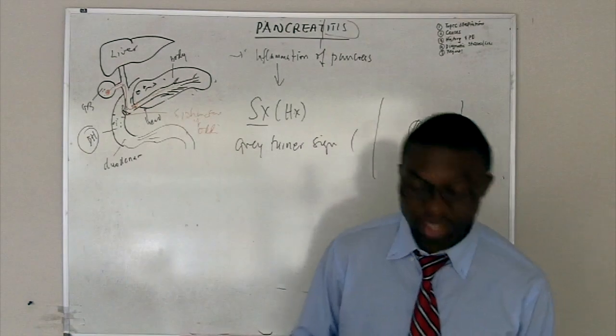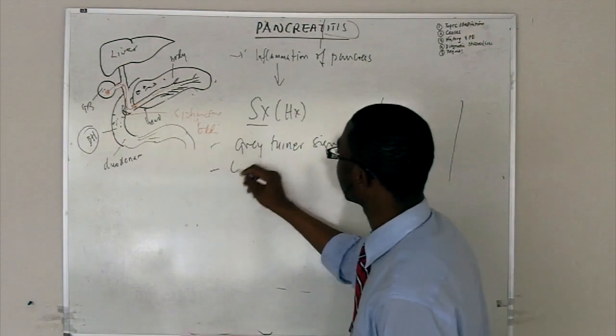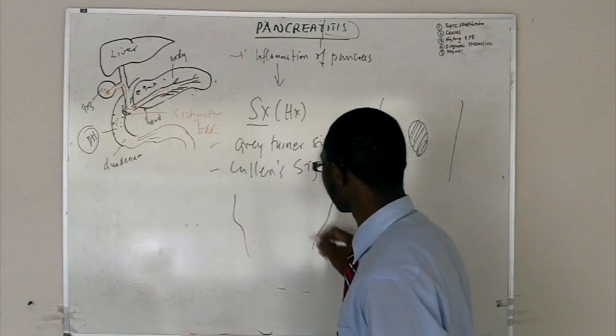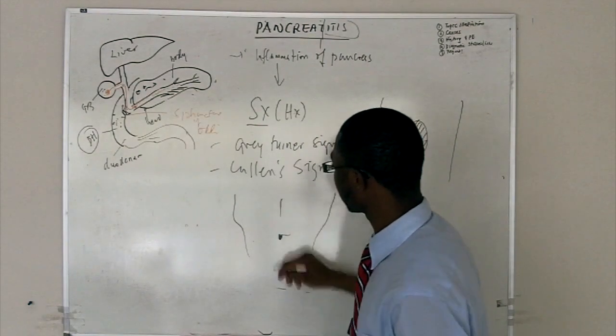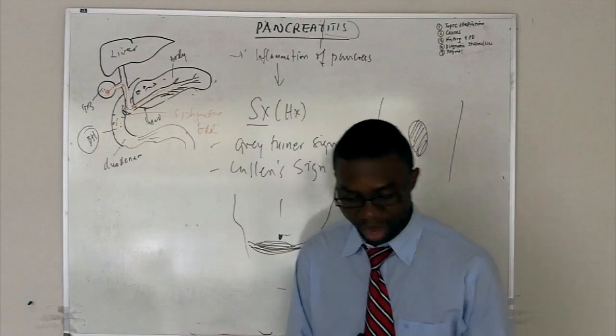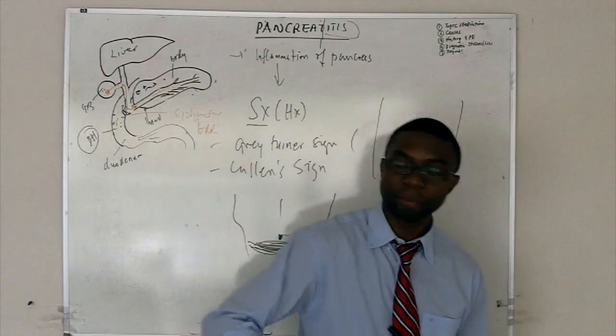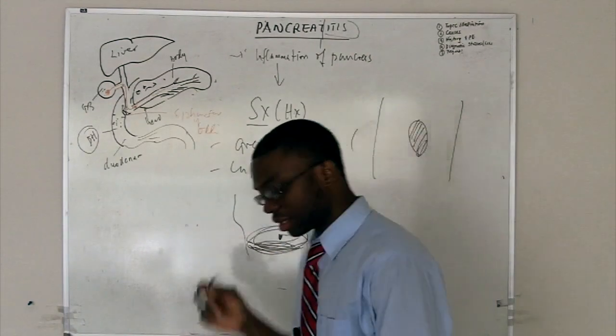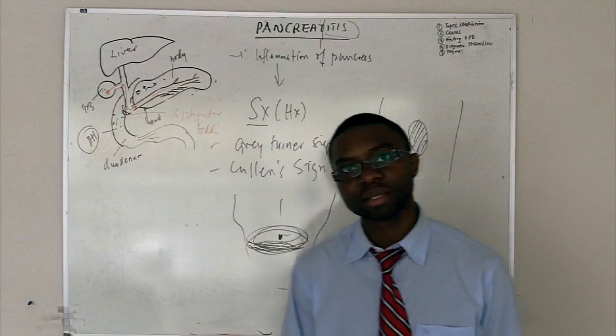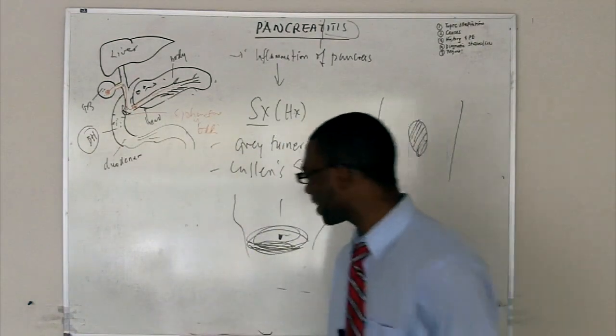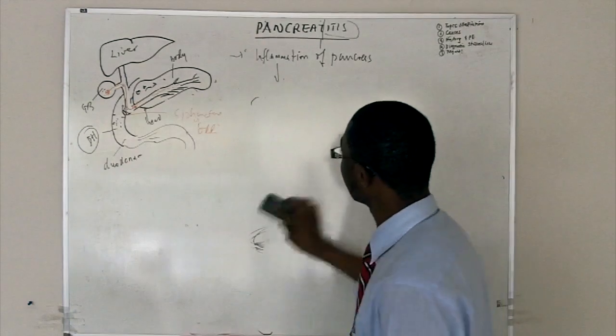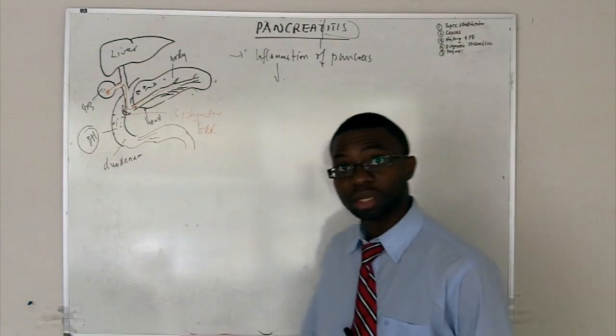The second sign which you need to know is the Cullen sign. These two signs are often tested on your boards. The Cullen sign will be periumbilical. This is your belly button. Right in there, you might be able to see an ecchymotic discoloration, periumbilical. These are the two signs, Grey Turner's and Cullen sign. Don't forget that. But you don't always see it. How do we really make the diagnosis? Mid-epigastric pain radiating to the back. They're nauseous. They're vomiting. The guy says he's an alcoholic. You order the labs.